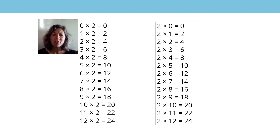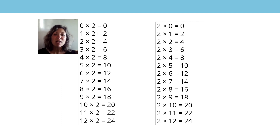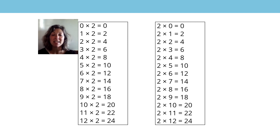Two zero times is zero, two one time is two, two two times is four, two three times is six, two four times is eight, two five times is ten, two six times is twelve, two seven times is fourteen, two eight times is sixteen, two nine times is eighteen, two ten times is twenty, two eleven times is twenty-two, two twelve times is twenty-four.